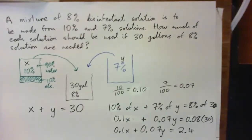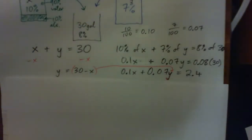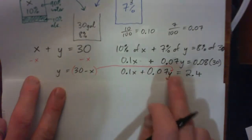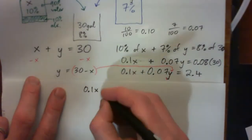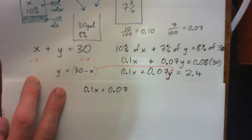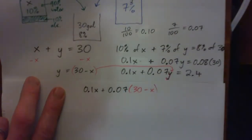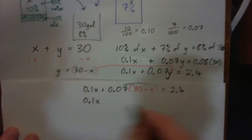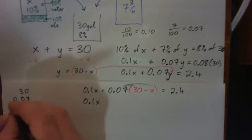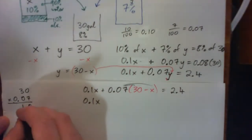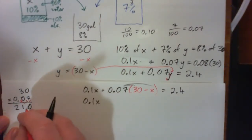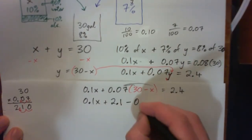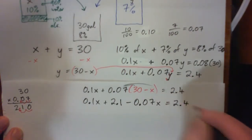Now we substitute y = 30 − x into the second equation, giving: 0.1x + 0.07(30 − x) = 2.4. Expanding, 0.07 × 30 = 2.1 (since 7 × 3 = 21, then move decimal two places), so we get: 0.1x + 2.1 − 0.07x = 2.4.